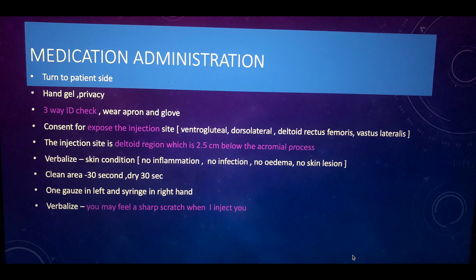Once everything is prepared, place the loaded syringe into the kidney tray. Since you are in the same room, turn to the patient side. Ensure the patient has privacy and perform the three-way ID check. Put on your apron and gloves. Then obtain consent for exposure of the injection site and tell the patient the possible injection areas for an IM injection.